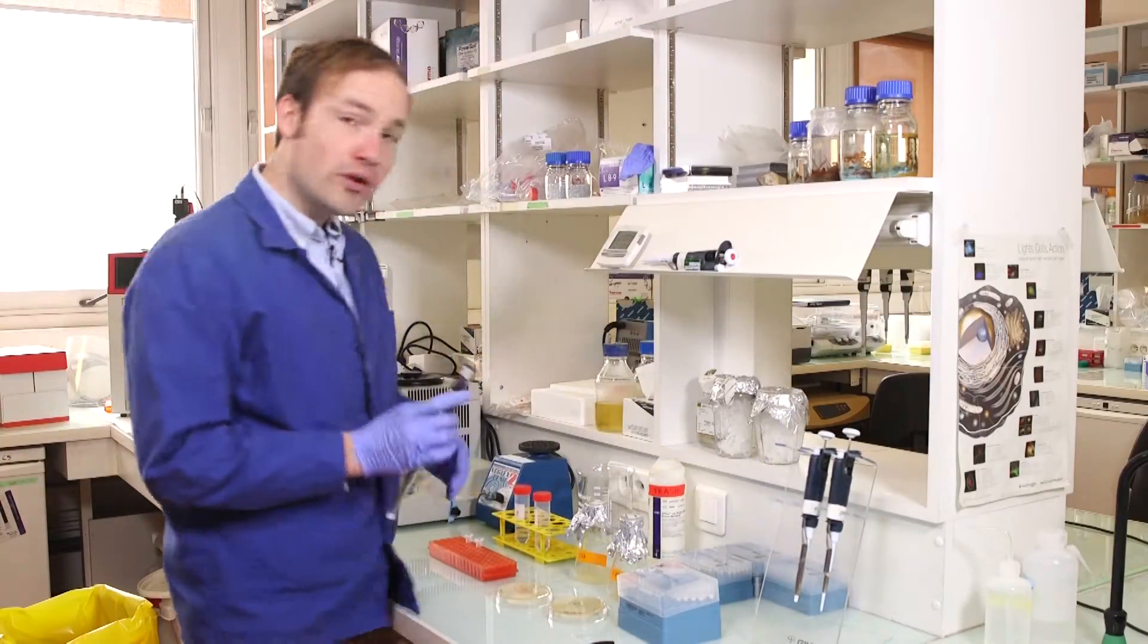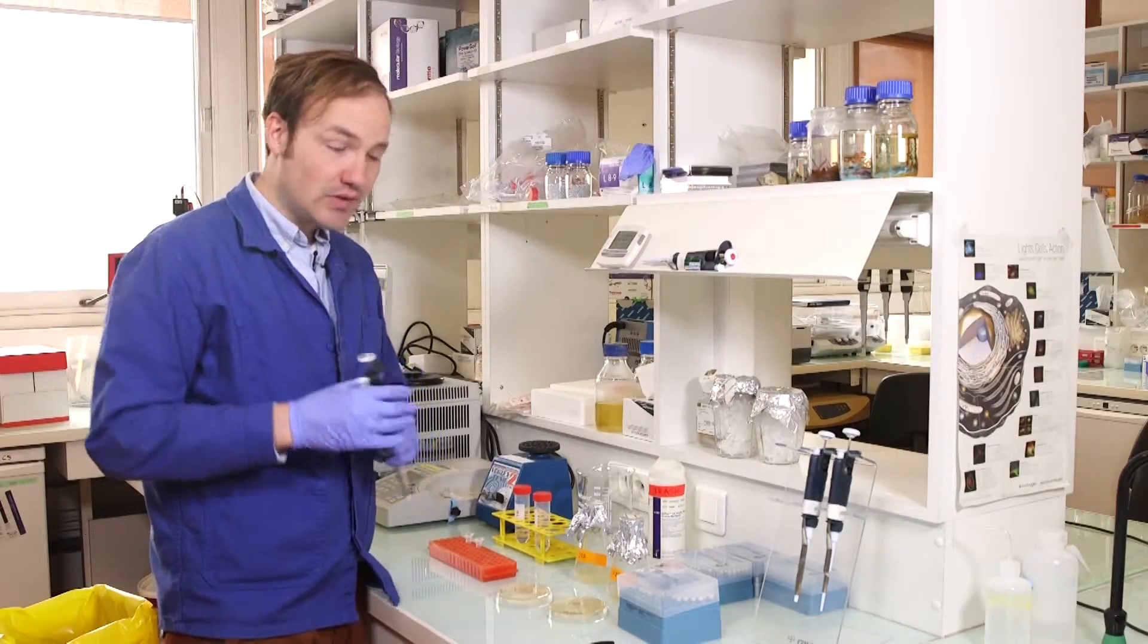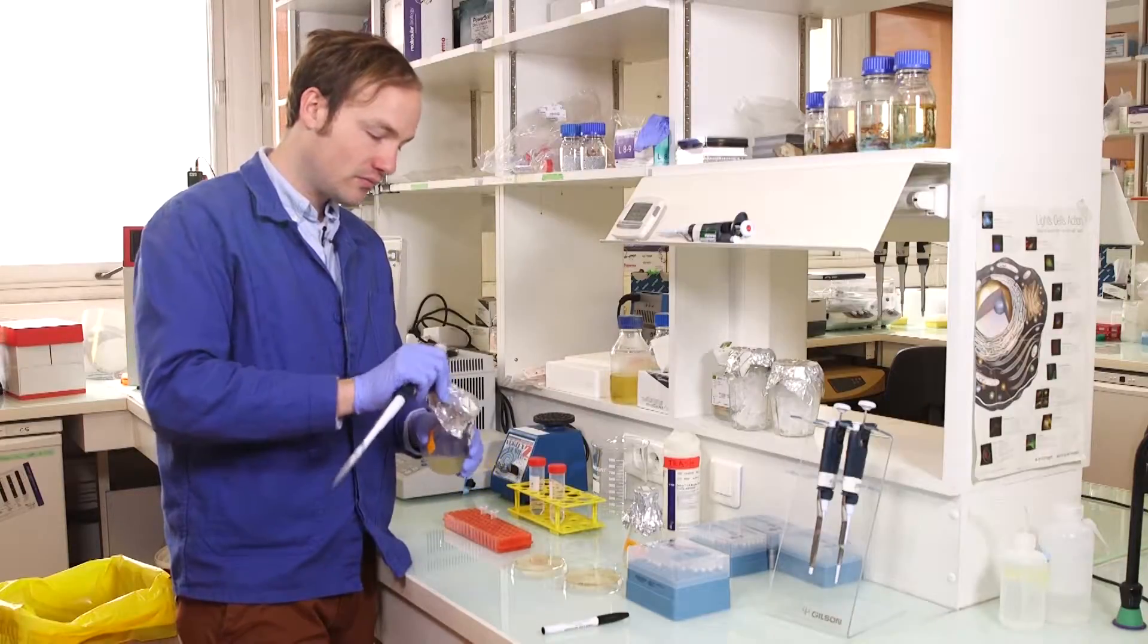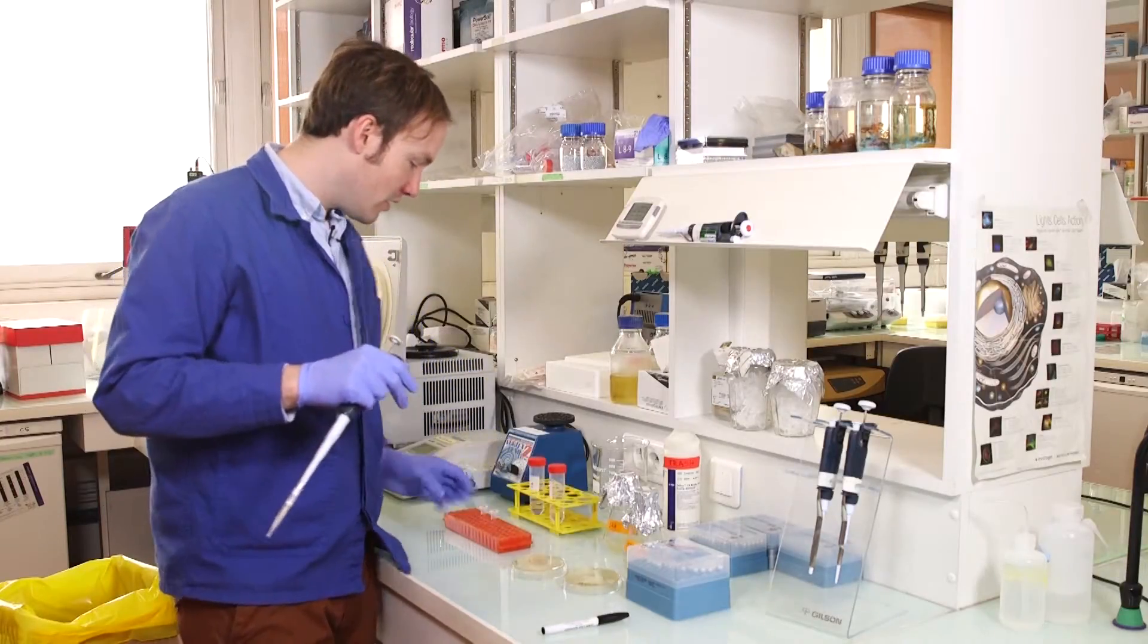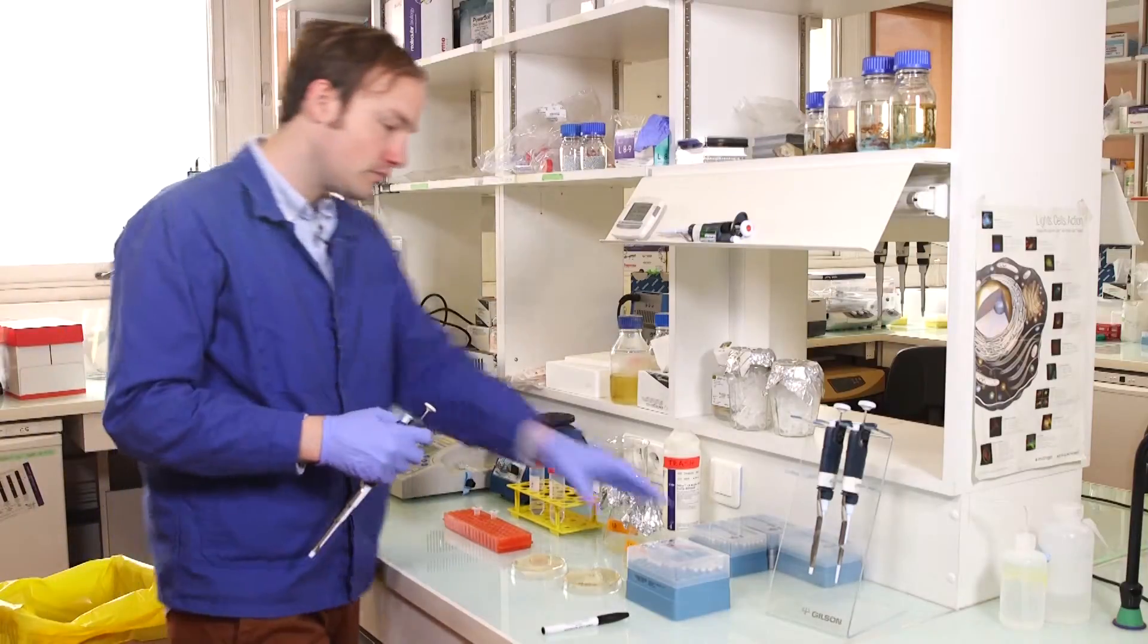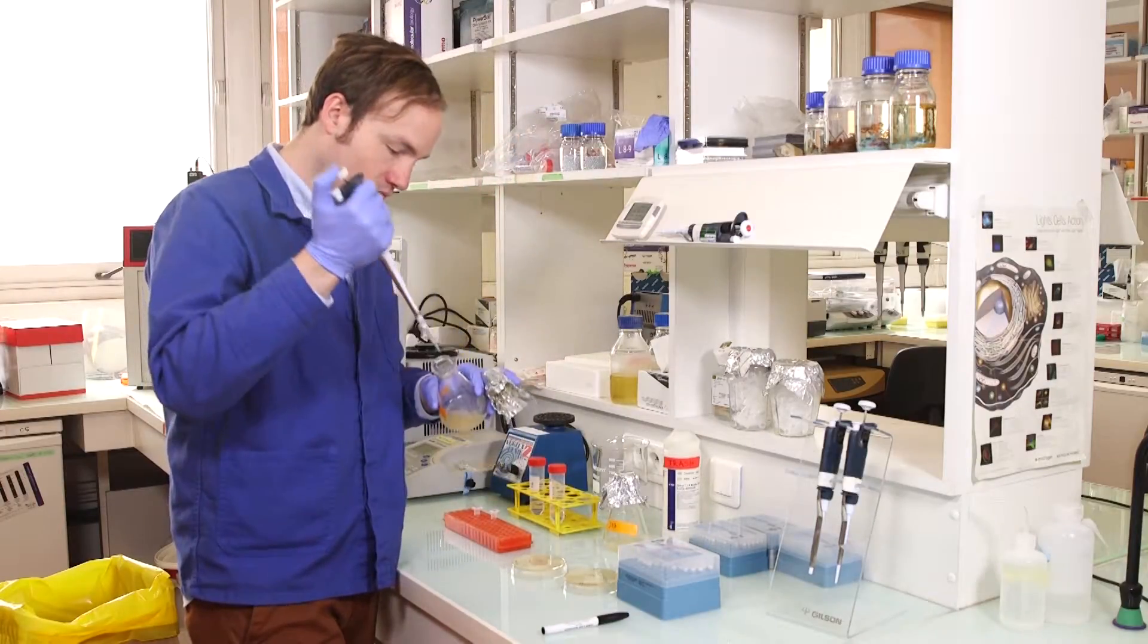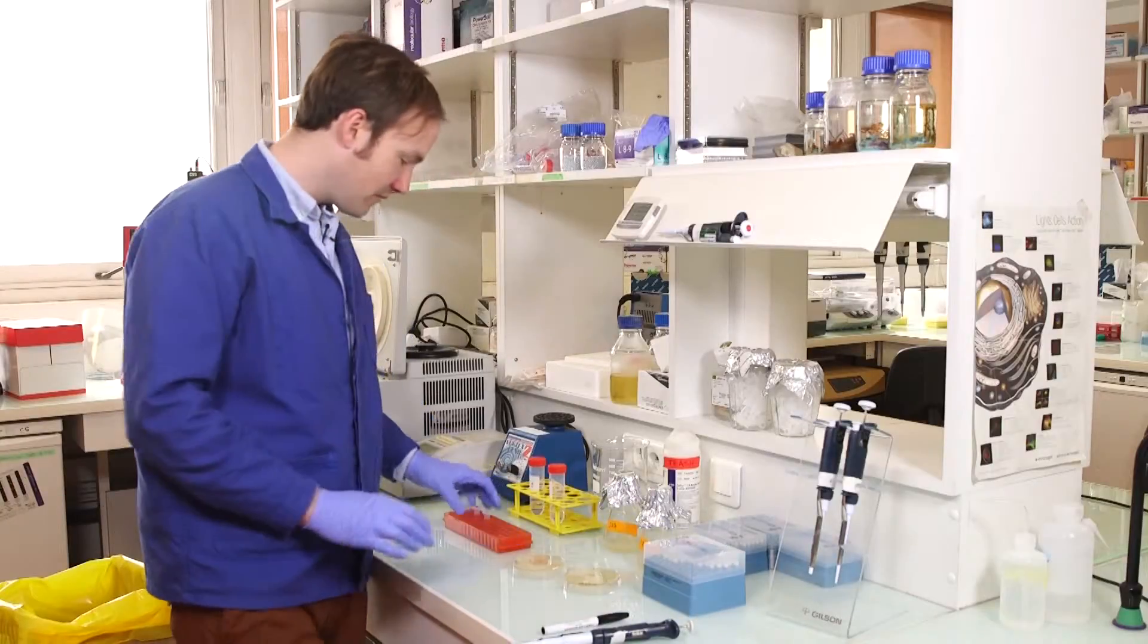Next step, take a 1 ml aliquot of each of these cultures. Our fluorescent measurement technology is very sensitive, does not require a large volume of cells. One ml is going to be more than enough. Take my 1 ml of cells, transfer it to a 1.5 ml Eppendorf tube like this one, and don't forget to label.